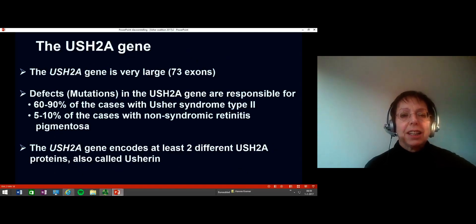The USH2A gene is very large. It has 73 exons. I will explain later what exactly this is. Defects or mutations in the USH2A gene are responsible for 60 to 90% of cases with Usher syndrome type 2, but also for 5 to 10% of cases with non-syndromic retinitis pigmentosa.